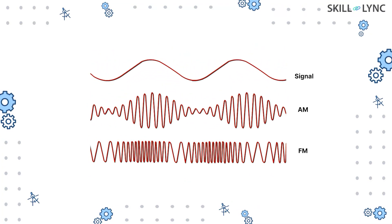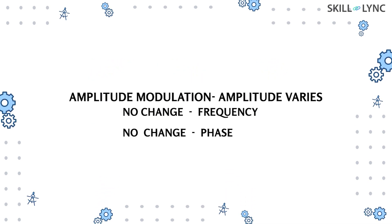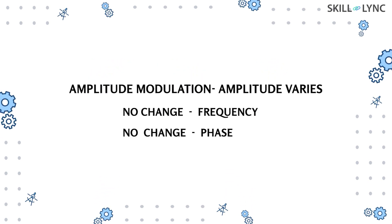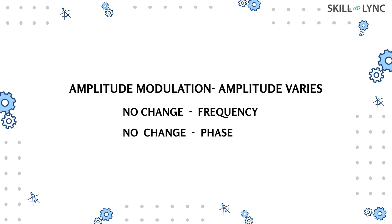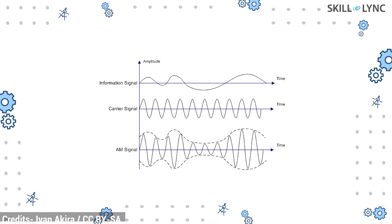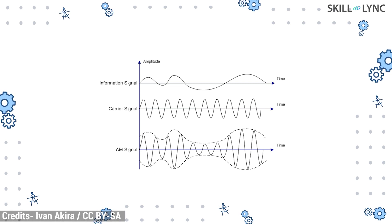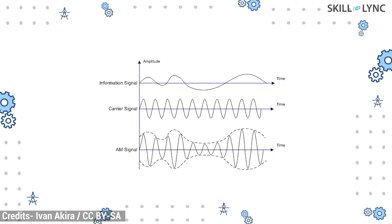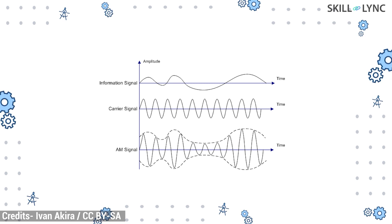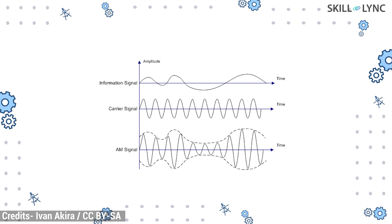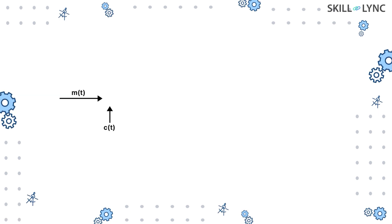Today we'll be discussing amplitude modulation and frequency modulation. In amplitude modulation, the amplitude of the carrier wave is varied while the frequency and phase undergo no changes. Three graphs are shown: the first is the message signal, the second is the carrier signal, and after modulation we obtain the third graph — the modulated signal. The carrier signal in the modulated graph has its amplitude corresponding to the message signal, and the modulated signal has outer imaginary lines known as envelopes.